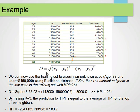We can now use the training set to classify an unknown case, let's say age 33 and loan $150,000 using Euclidean distance. If k equals 1, then the nearest neighbor is the last case in the training set with HPI house price index is 264, the last one because that is the closest one to an input point of this value. I don't know why the numbers don't match, but I hope the idea makes sense that we just find the distance between the new point and all the existing points. And then if k equals 1, then it's the nearest point, i.e. the one with the smallest distance.